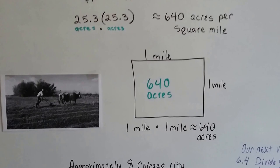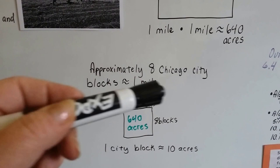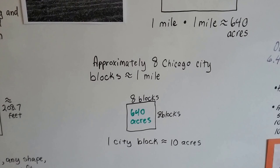Now in Chicago, there's about eight city blocks in one mile, roughly. So eight city blocks this way in Chicago and eight city blocks this way would be the 640 acres.